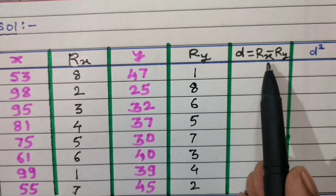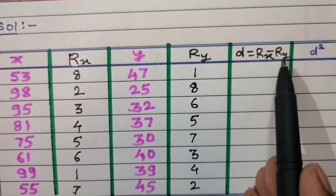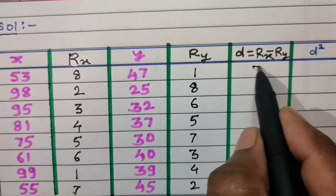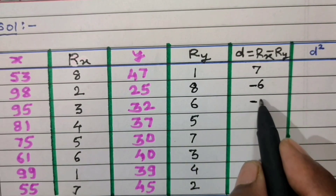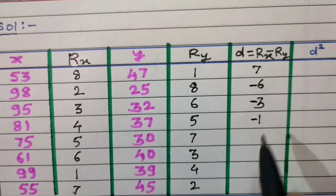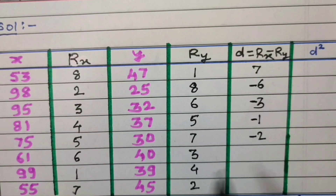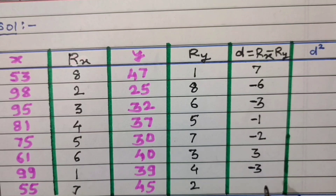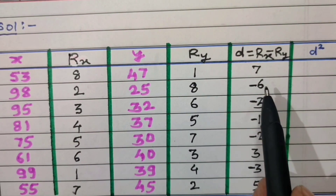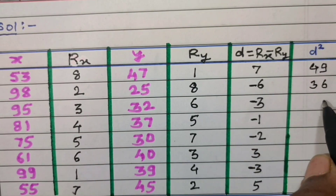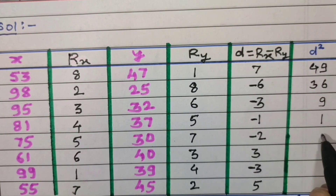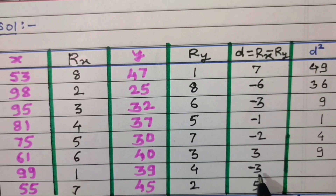Now compute d = Rx − Ry for each pair: 8−1=7, 2−8=−6, 3−6=−3, 4−5=−1, 5−7=−2, 6−3=3, 1−4=−3, 7−2=5. Then d² values are: 49, 36, 9, 1, 4, 9, 9, 25.